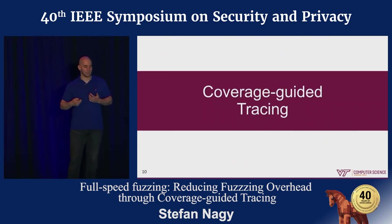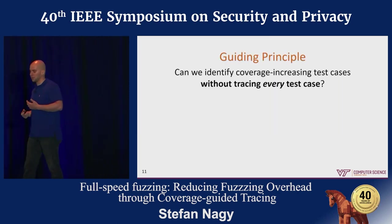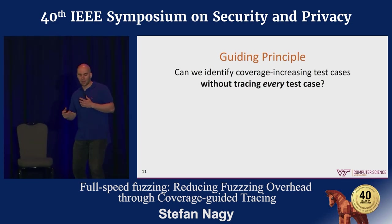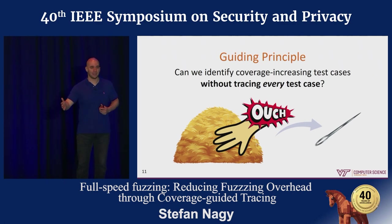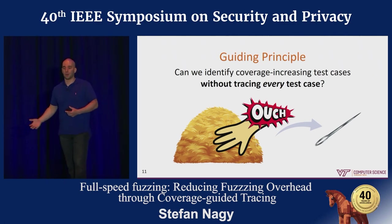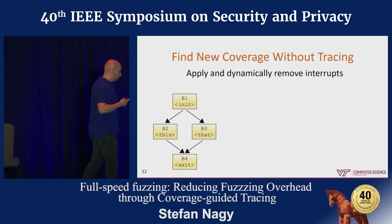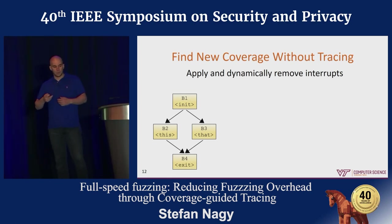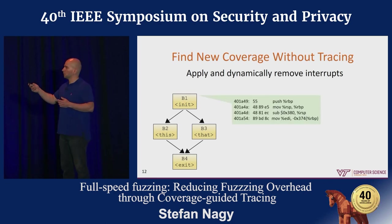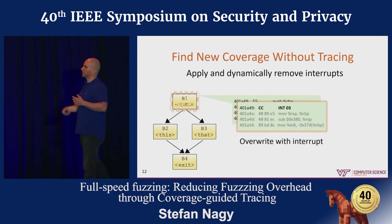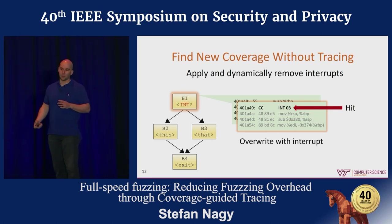This is where coverage-guided tracing tries to fit in and solve this problem. Our guiding intuition is that rather than tracing test cases to find coverage, we want to find the few coverage-increasing test cases without having to trace every single one generated — like sticking our hand in the haystack and getting poked, rather than using a magnifying glass on every piece of hay. On a micro scale, instead of relying on tracing instrumentation, we use interrupts. For a given application, say we want to track coverage of block B1 — the starting point of the control flow graph — we write the first hex byte of it with an interrupt. As a test case executes that basic block, it triggers the interrupt, and we know it has increased code coverage.